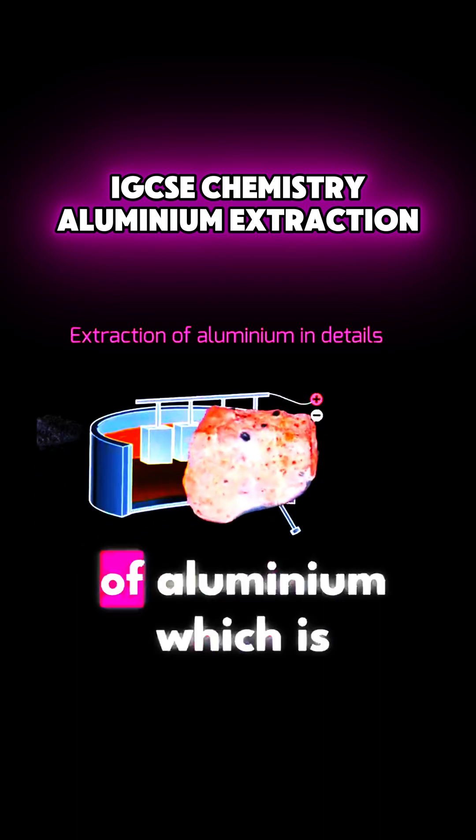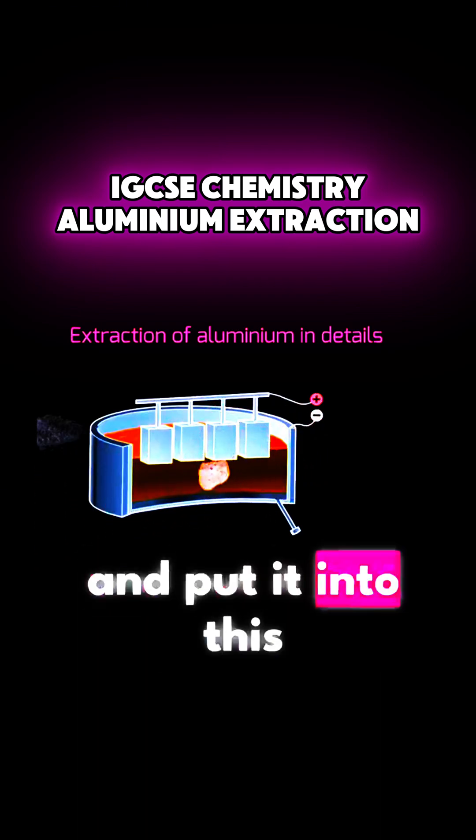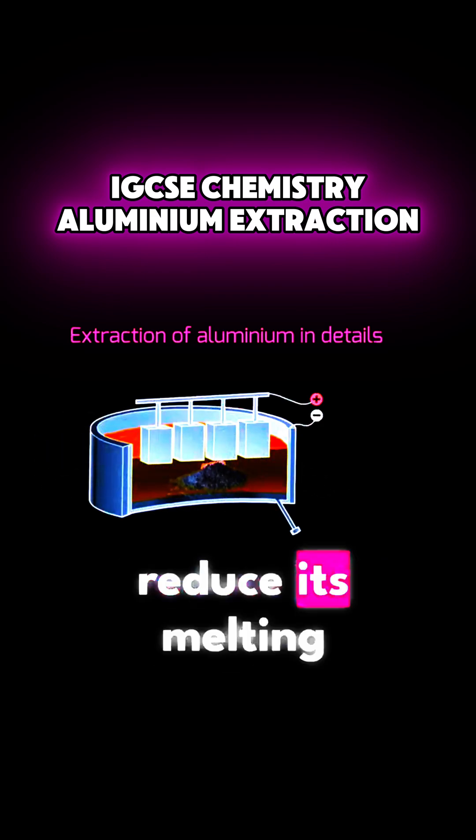To do so, we need to get the ore of aluminium, which is the bioxide, and put it into this furnace. And we also add the cryolite to reduce its melting point.